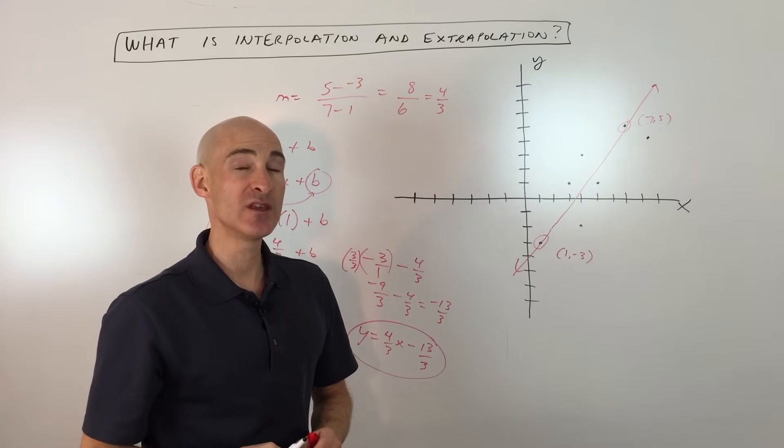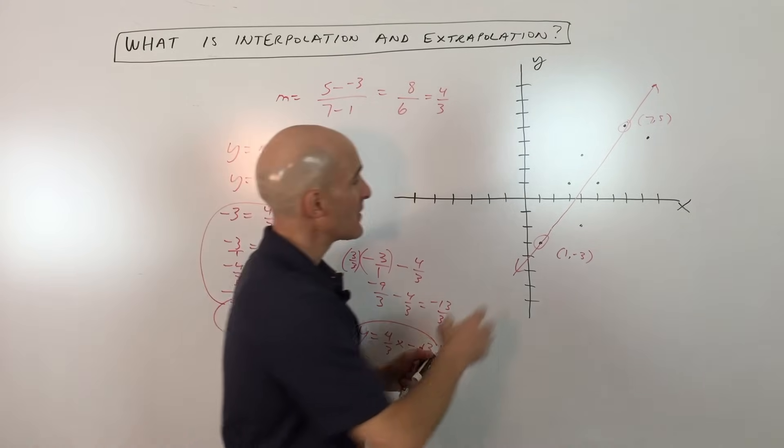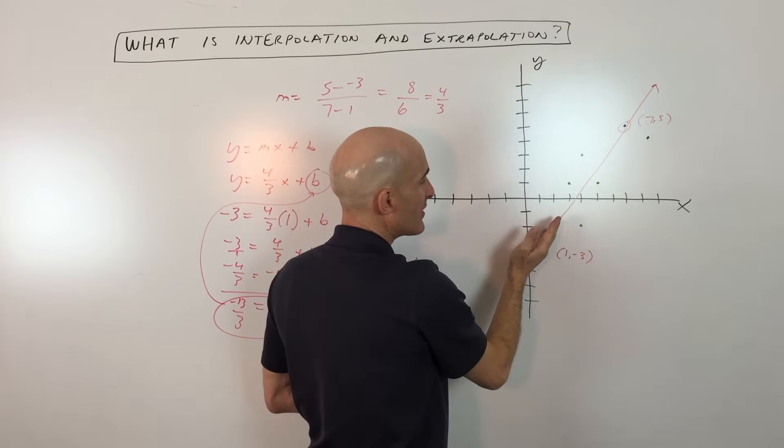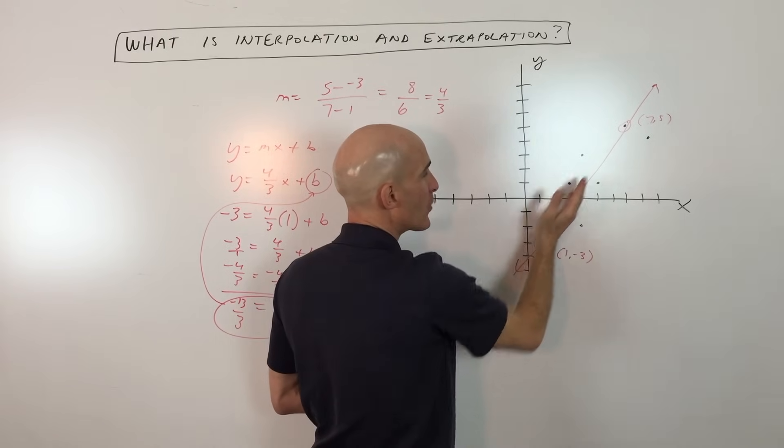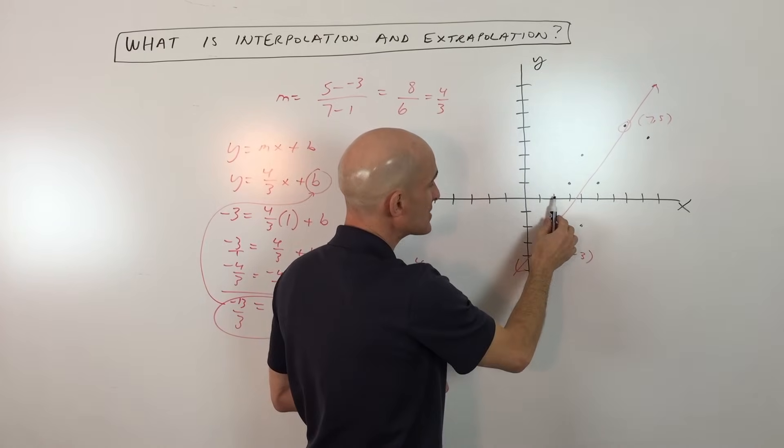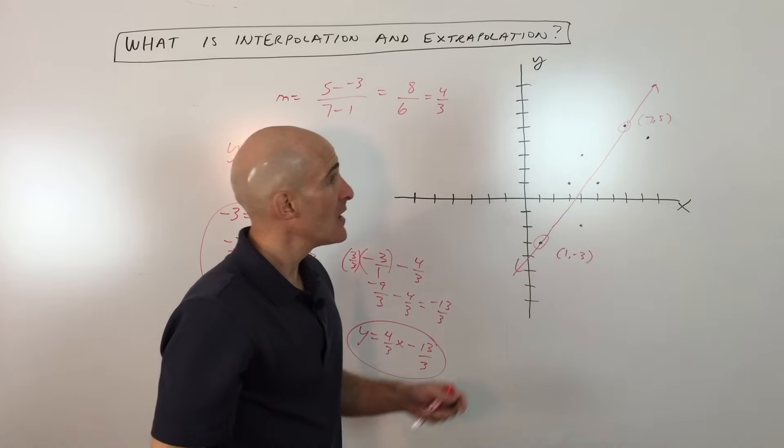Now, which one of those do you think would be more accurate? Well, if you said interpolation, you're right because we know the basic trend, we know it's trending up to the right. We have an approximation of the rate at which it's increasing. And so if we pick a point that's in between some of these known data points, it's going to be probably pretty close to what this line is approximating.